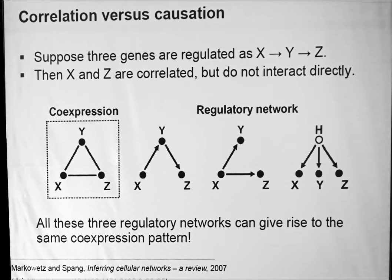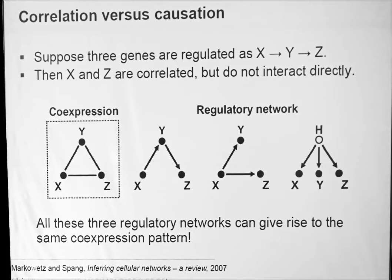Before I go into mathematical details, I want to bring a very important message. There are different graph representations of different relations between random variables, and you have to be very careful in interpreting them — not all of them mean the same thing. There are statistical dependencies that I will talk about, but there are also correlations which you can observe among different variables, and what people like to think of as causative relations. They are definitely not the same.